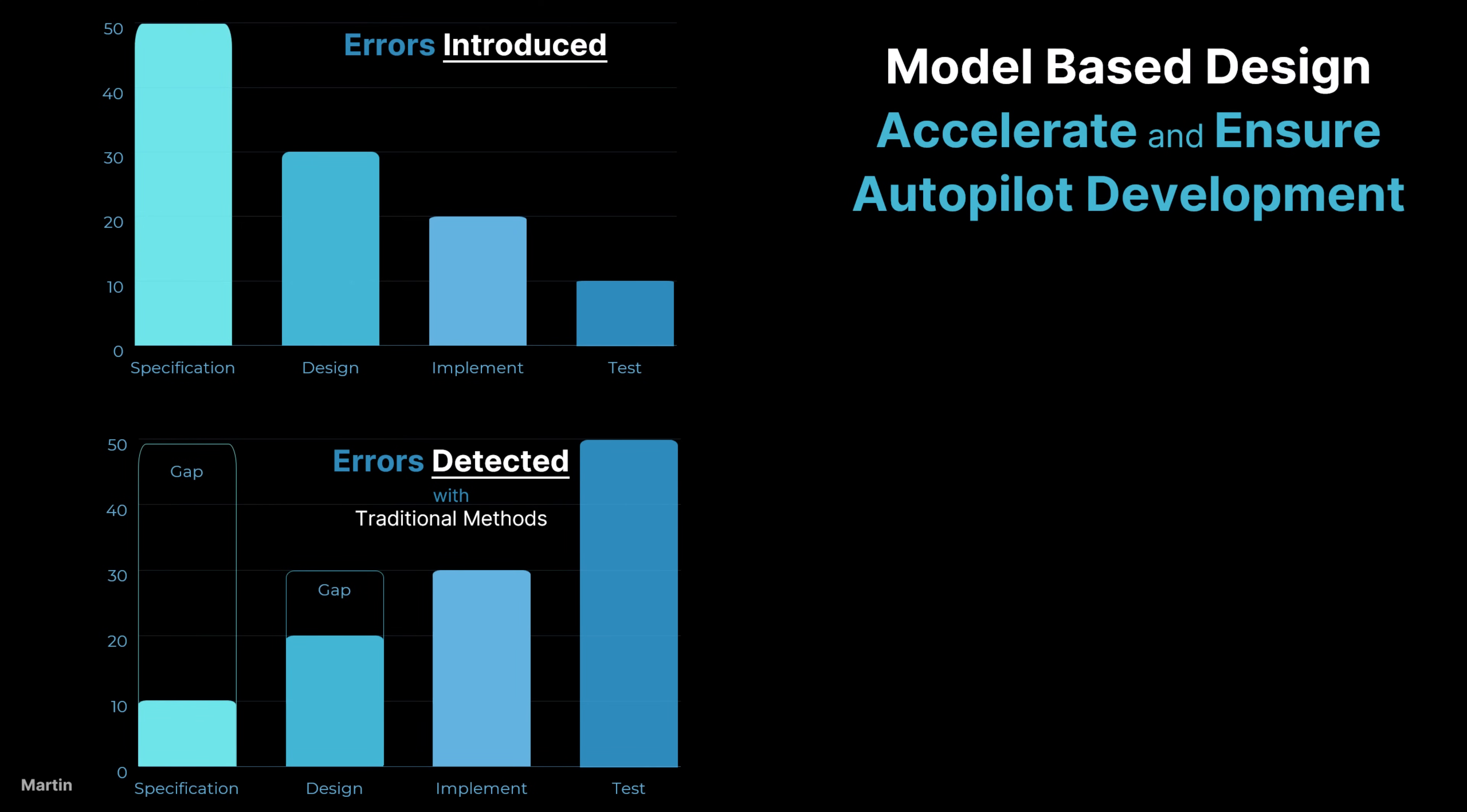In traditional development methods, errors tend to be detected more often during the implementation and testing phases rather than the earlier specification and design phases. This happens because traditional workflows often prioritize coding first, and issues in requirements or design may only become apparent when the system is being implemented or tested. However, detecting errors late in the development cycle is costly and time-consuming. Fixing a requirement or design flaw after implementation may require significant rework, leading to delays and higher costs.